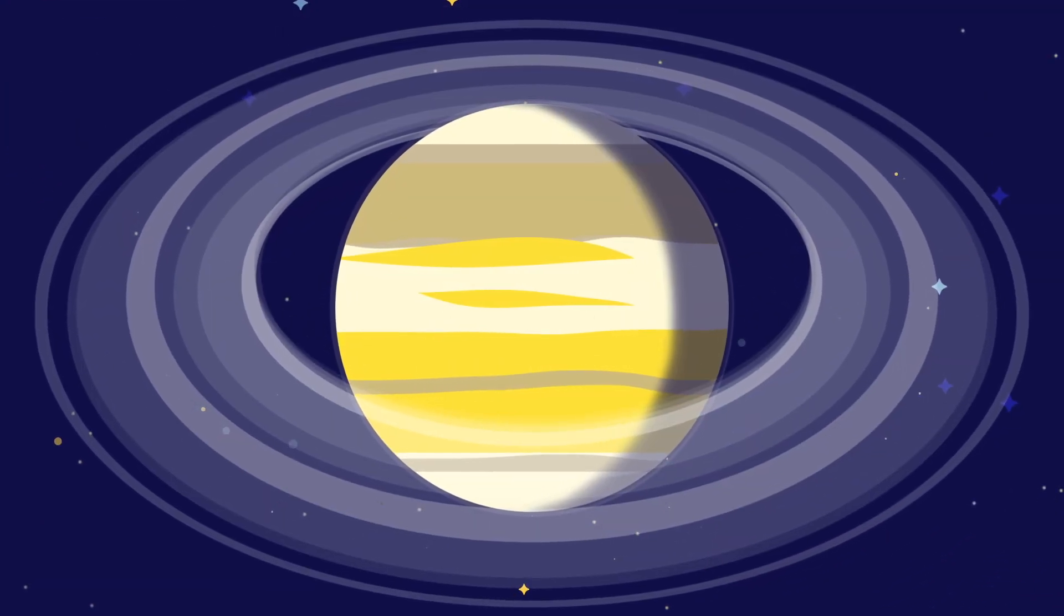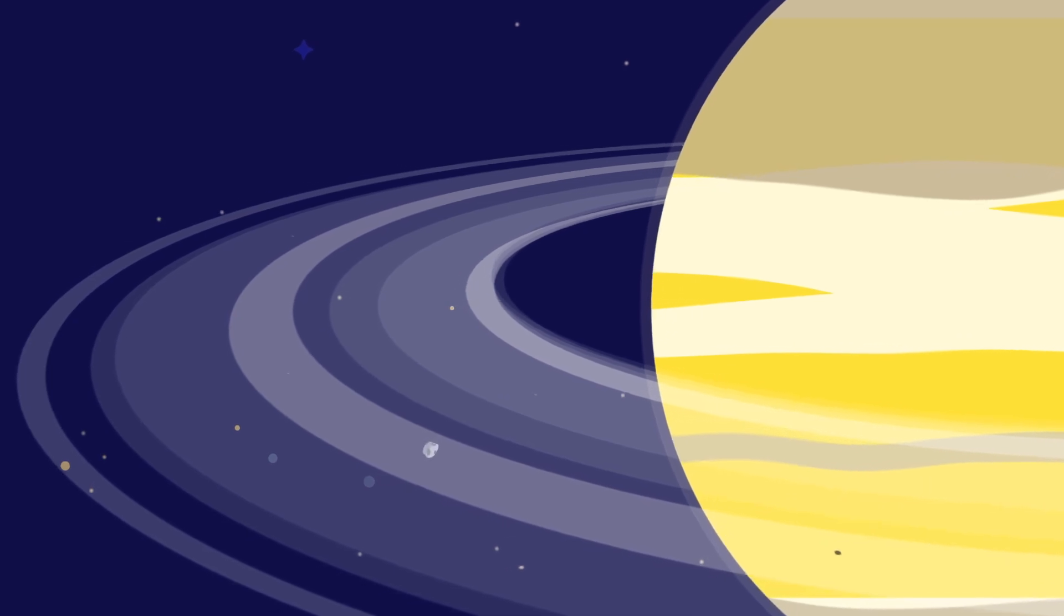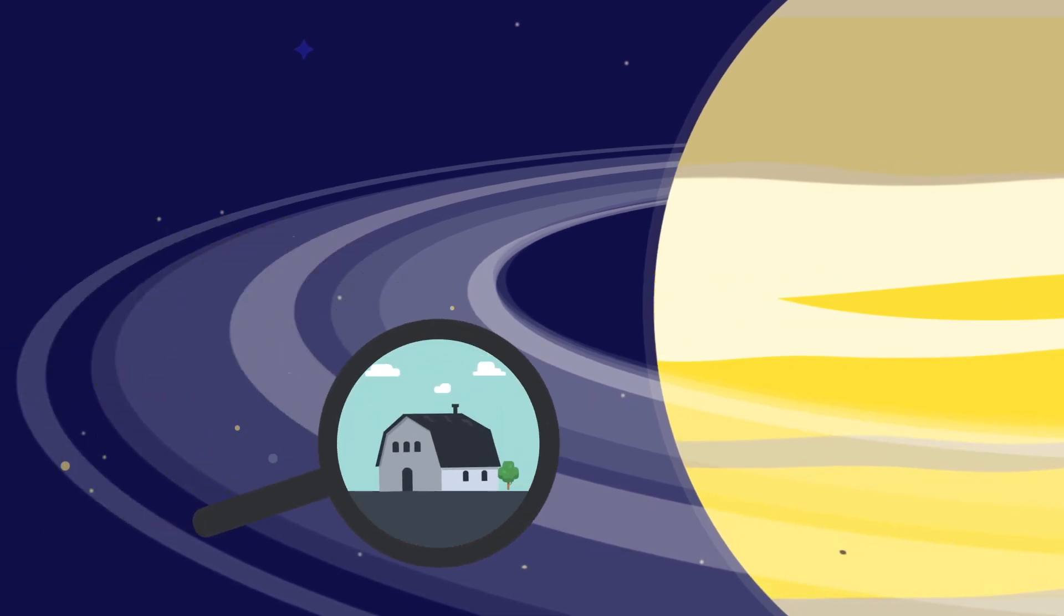Saturn is famous for its rings, which consist of a large number of ice particles, ranging in size from specks of dust to a three-story house.